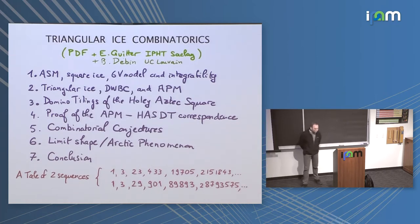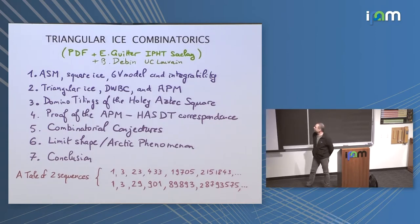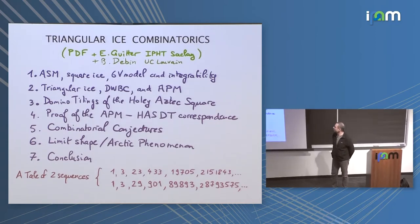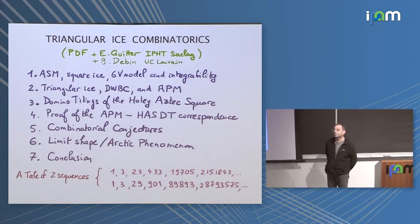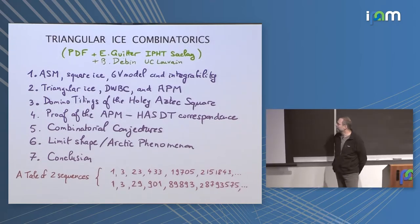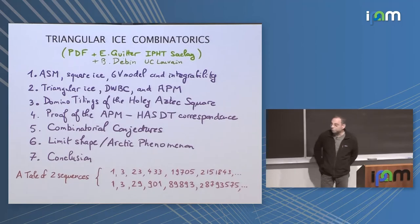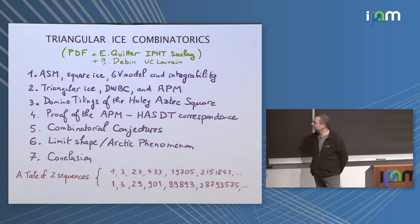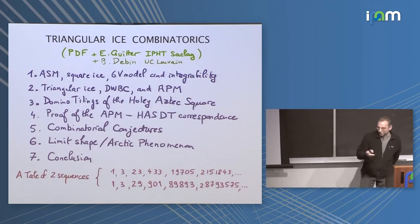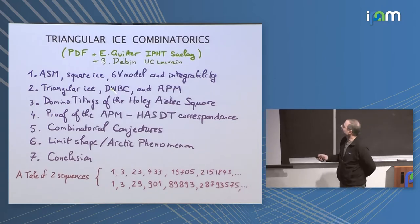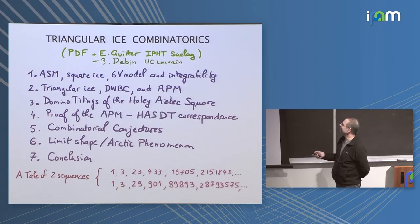I'll start by reminding you of a few facts about alternating sign matrices, six-vertex models and integrability and the role played by integrability. And then we'll go over to the triangular lattice version. I apologize to Igor for using acronyms — DWBC stands for Domain Wall Boundary Conditions, and the next acronym is well, the next thing to alternating sign matrices, so I'll let you guess.